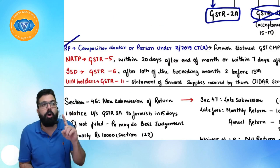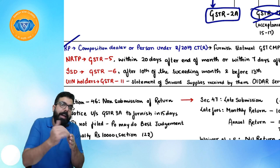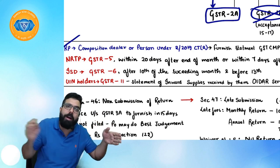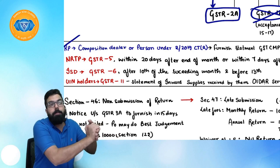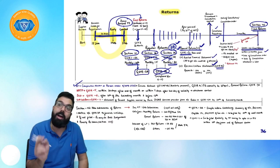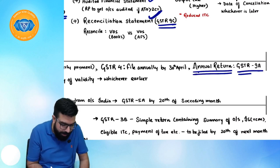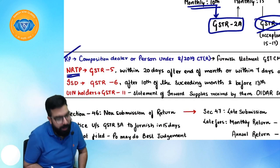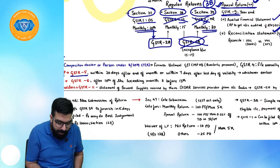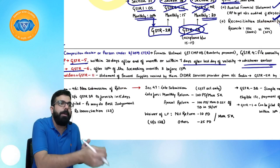A composition dealer or person paying tax under the 2019 notification must make quarterly payments and file an intimation in GST CMP-08 every quarter, and file annual return GSTR-4 by 30th April. Composition dealers also file annual return GSTR-9A. NRTP (Non-Resident Taxable Person) files GSTR-5 within 20 days of month end or within 7 days of expiry of registration validity, whichever is earlier. ISD files GSTR-6 (after 10th, before 13th). UIN holder files GSTR-11 as a statement of inward supplies to claim refund.